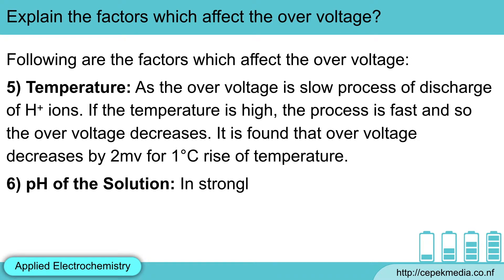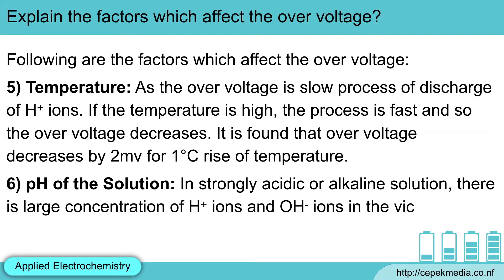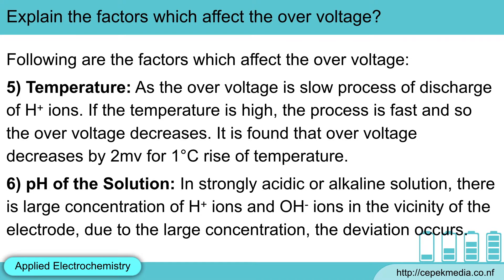Sixth, pH of the solution. In strongly acidic or alkaline solution, there is a large concentration of hydrogen ions and hydroxyl ions in the vicinity of the electrode. Due to the large concentration, the deviation occurs.